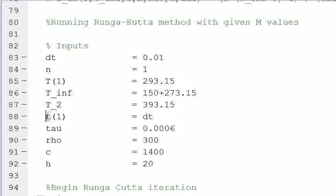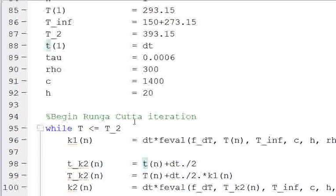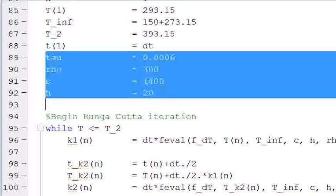And we're going to call t(1) our DT. So instead of starting at 0, we're going to start at DT. I don't know why I did that, but it must have seemed reasonable at the time. Tau, rho, c, and h are defined.